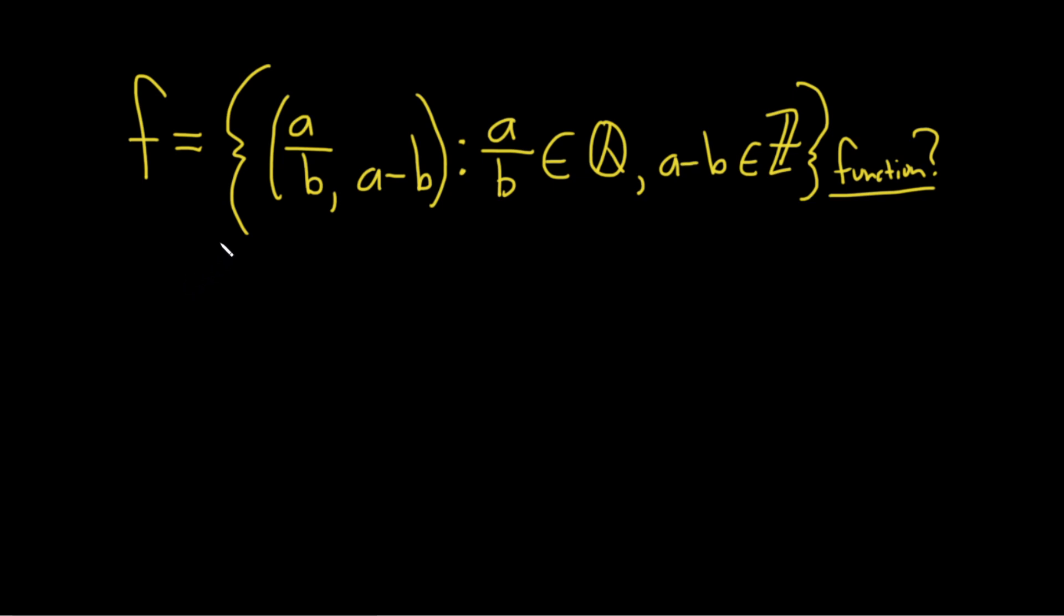Hi, in this video we're given a set f. It's the set of all ordered pairs of the form a over b comma a minus b, where a over b is in the set of rational numbers and a minus b is in the set of integers. And the question is, is this a function?